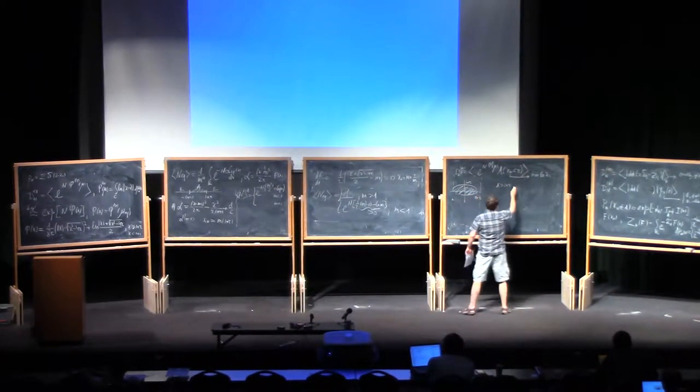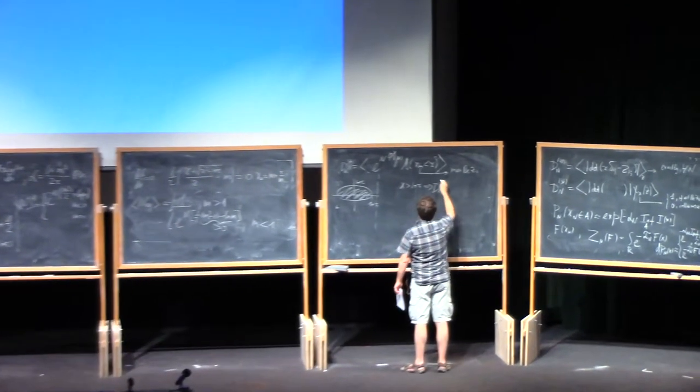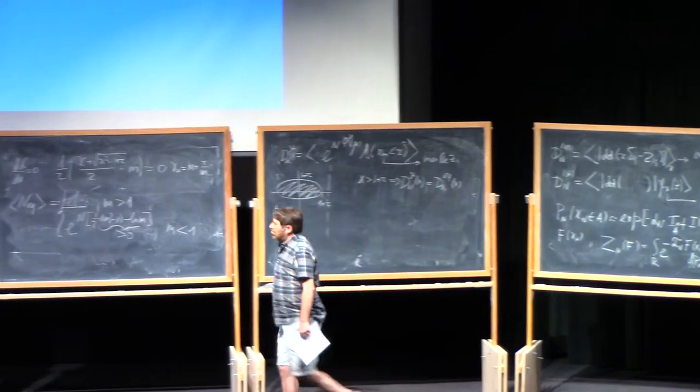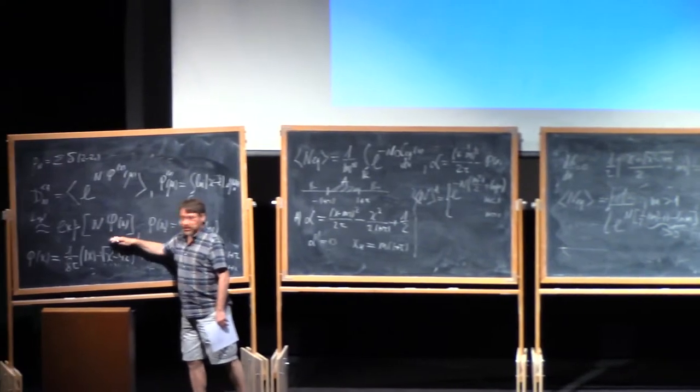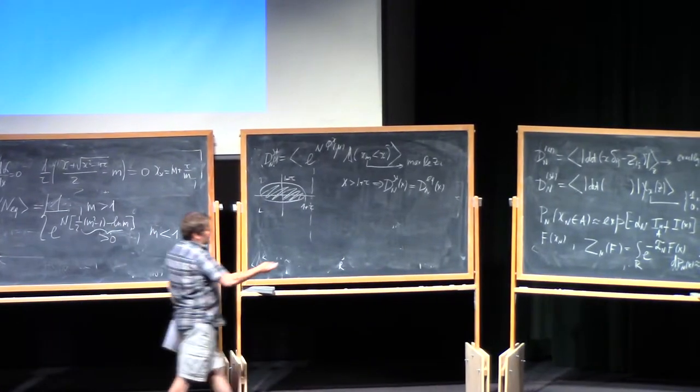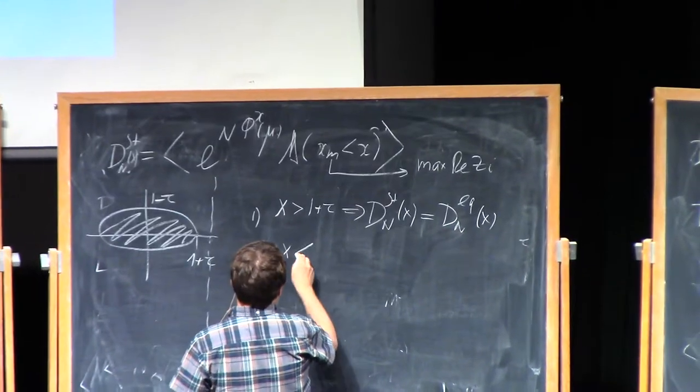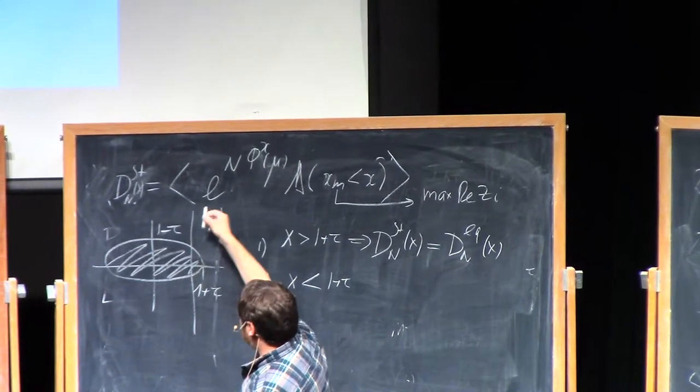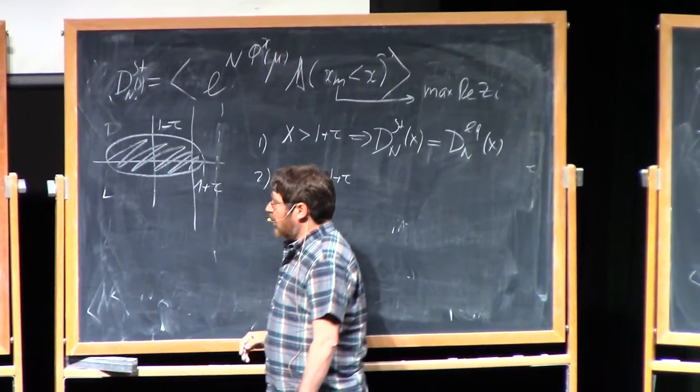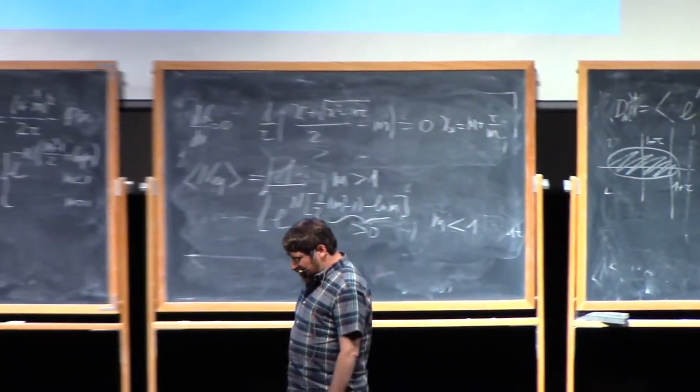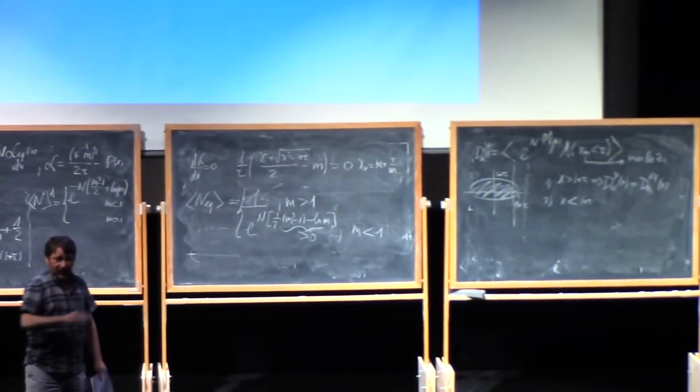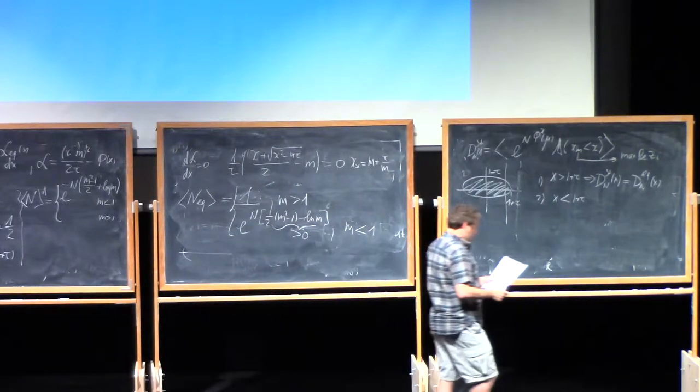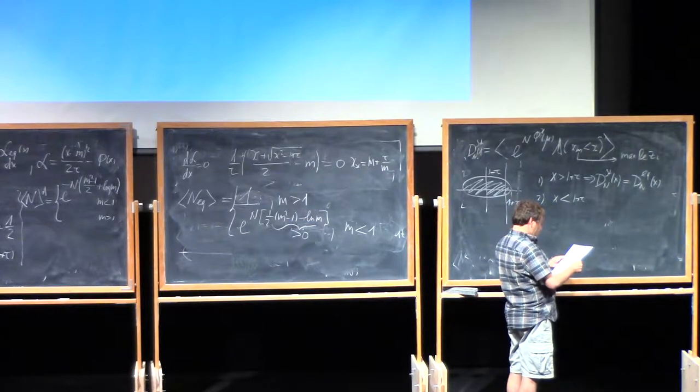So basically, in this situation, we see that we have the same result, equal to dn equilibrium, and equal to given by this exponential of n of phi of x. So this is the immediate conclusion. This is first case. Second case. What happens if x is smaller than 1 plus tau? Now we really consider situation when this line of conditioning is to the left of this. And we again know that the probability to fluctuate such that to satisfy this constraint is exponentially suppressed, exponential of minus n square times, really, the rate functional.